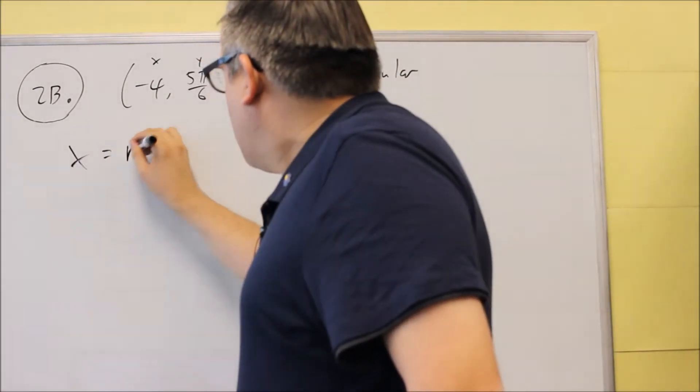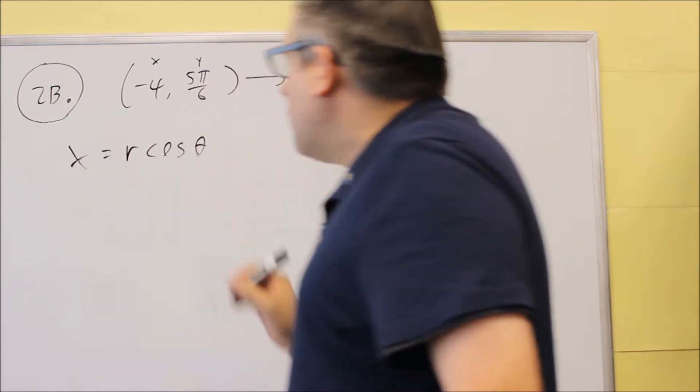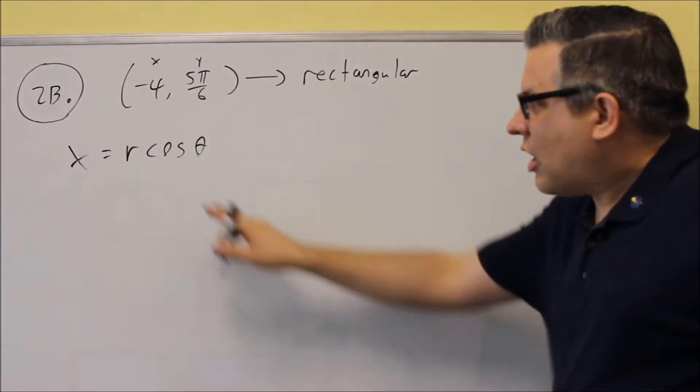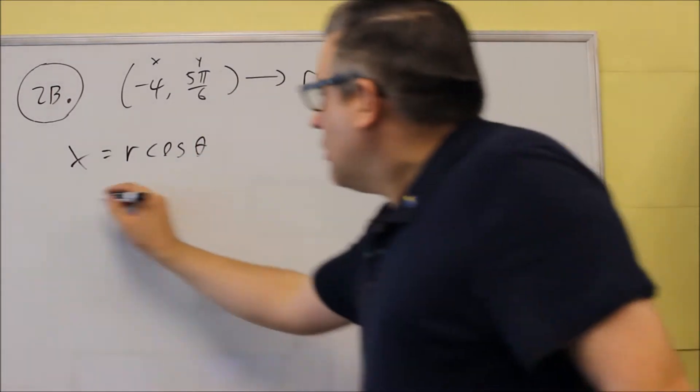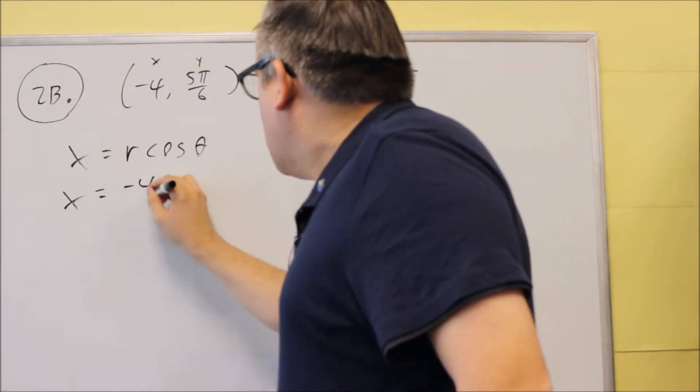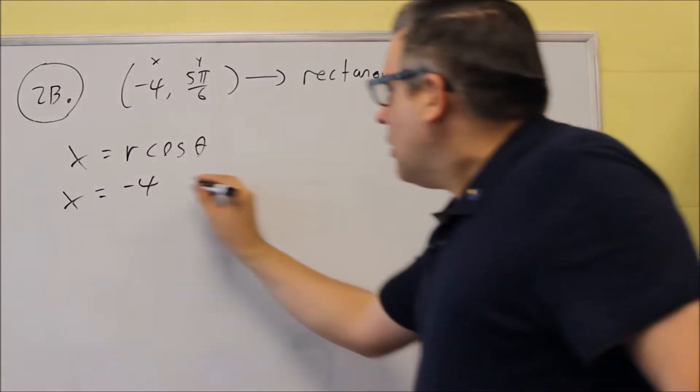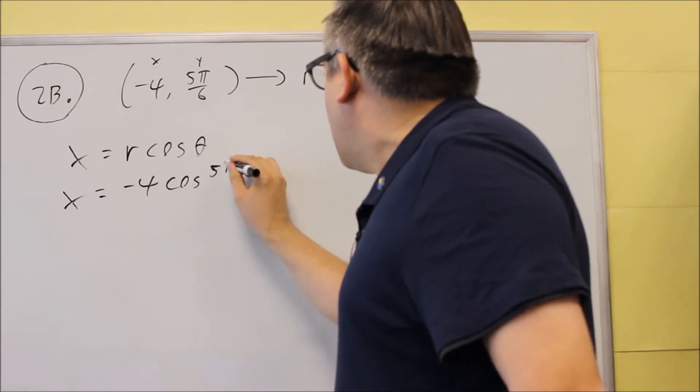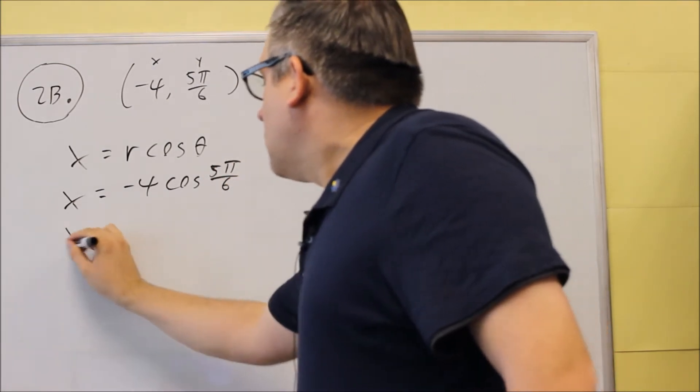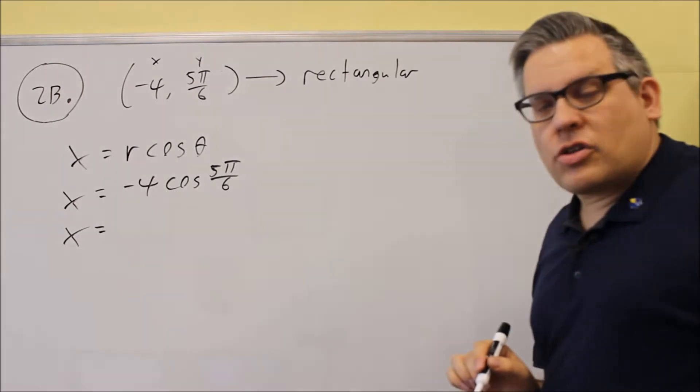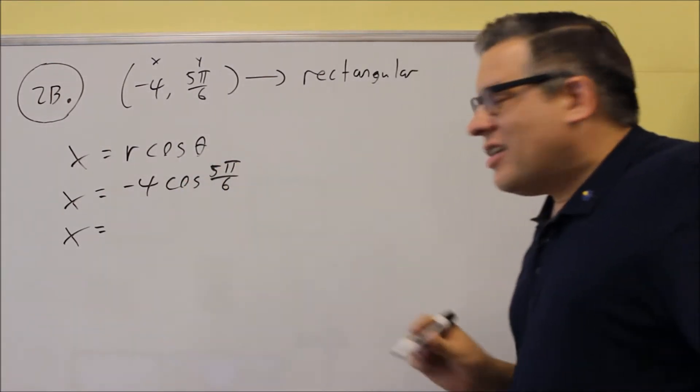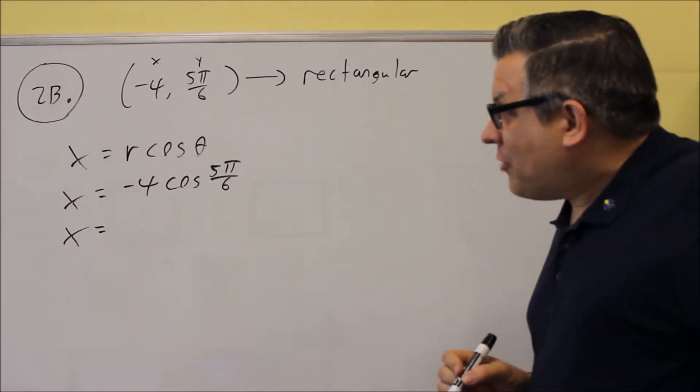To find the x value, you want to use this formula: x equals r cosine theta. So x is going to equal r, which is negative 4. And then we're going to do cosine 5 pi over 6. So you're going to need a unit circle on this one. You want to find the exact value for cosine 5 pi over 6.